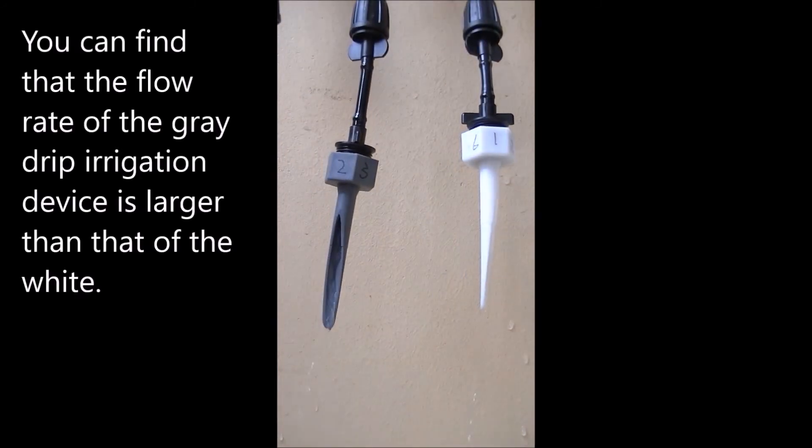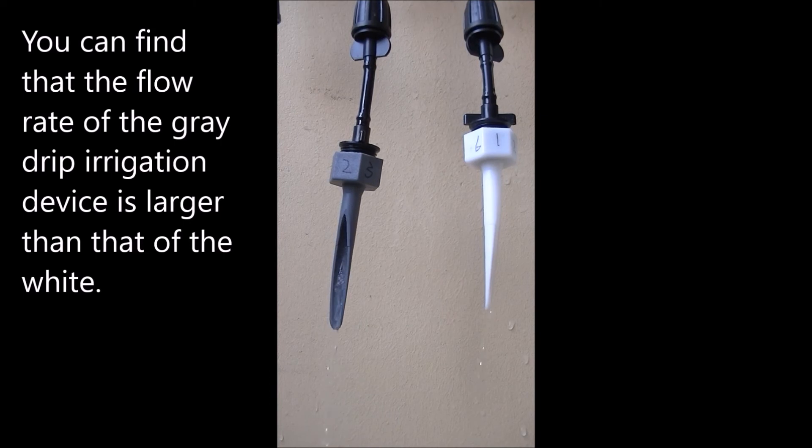You can find that the flow rate of the gray drip irrigation device is larger than that of the white.